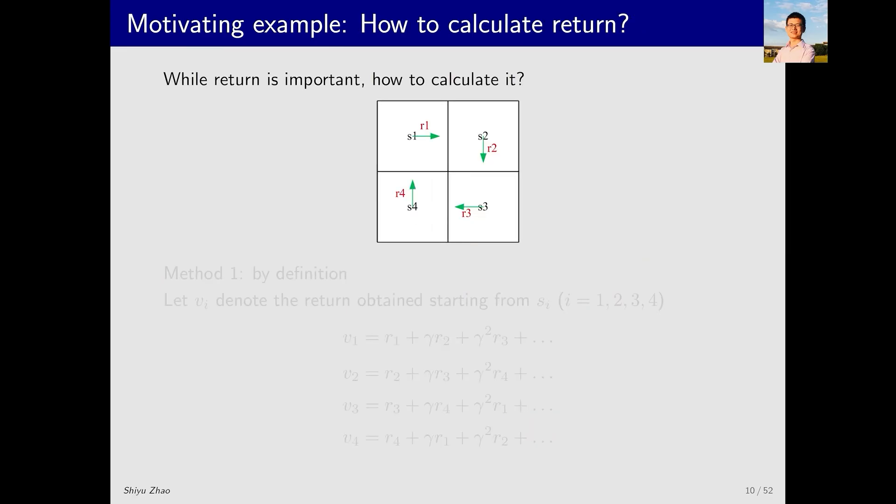Now, let's talk about how to calculate return. You might wonder why we are discussing this again, given that we've already calculated returns using their definition. The reason is that there are better ways of calculation. Consider an example with four states, S1, S2, S3 and S4, with given policies indicated by arrows and the corresponding rewards, R1, R2, R3 and R4. Let's not focus on the specific values of these rewards. Instead, we'll use these letters to represent them.